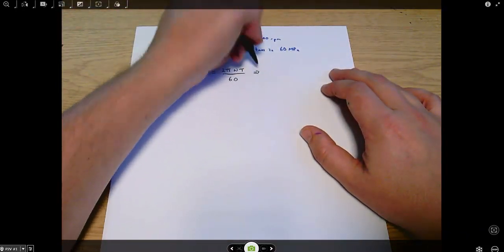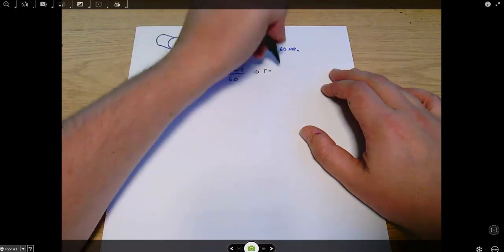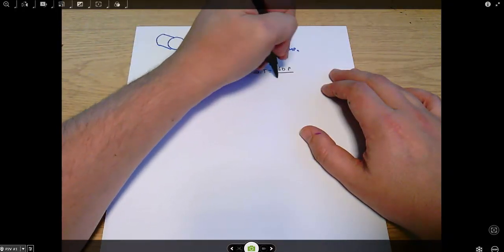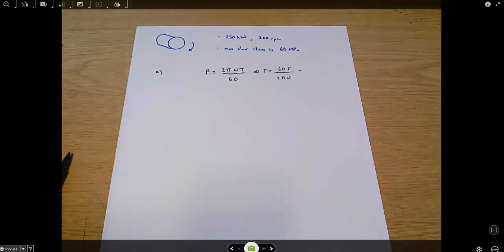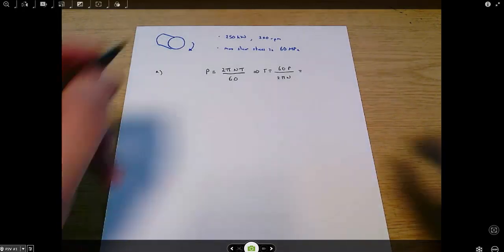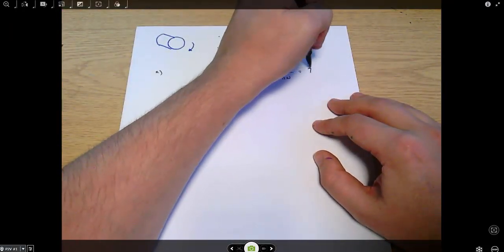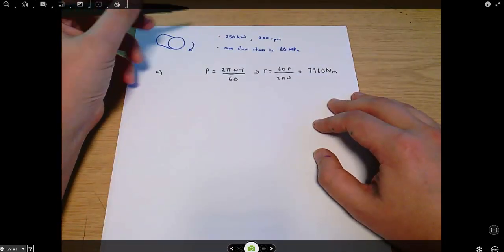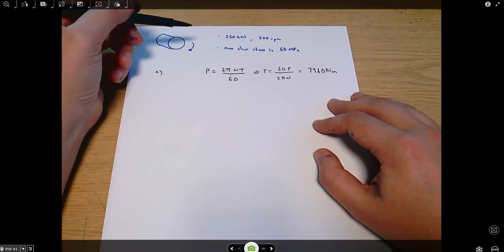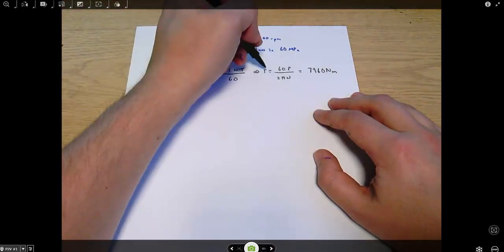I can rearrange this to say torque equals 60P over 2 pi n, which equals 60 times 250,000 divided by 2 divided by pi divided by 300. That comes out to 7957 on my calculator, but I'll say 7960 newton meters is the torque that's required here.